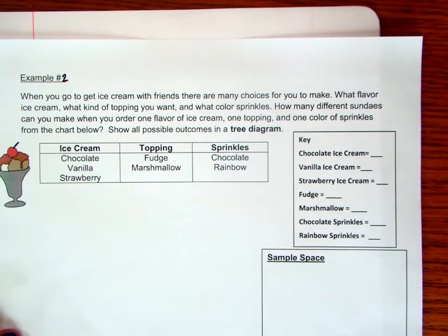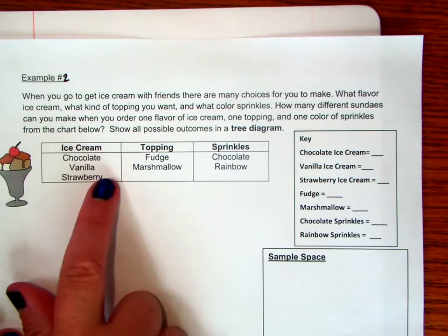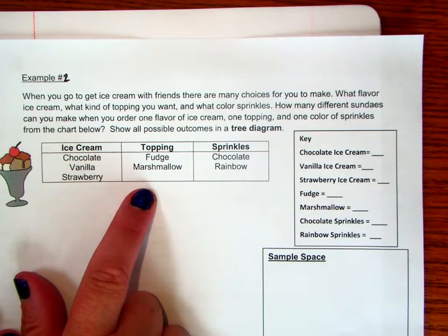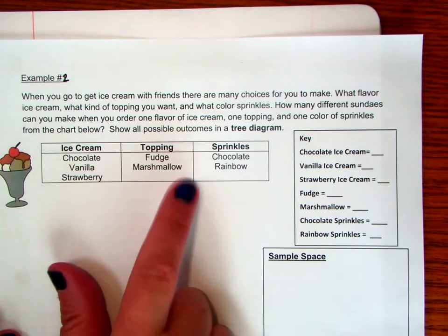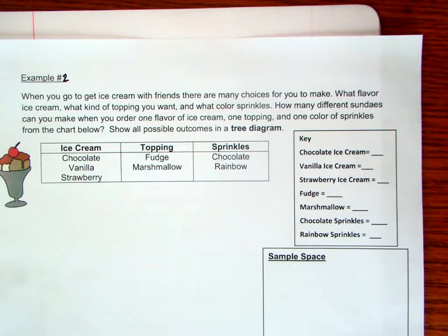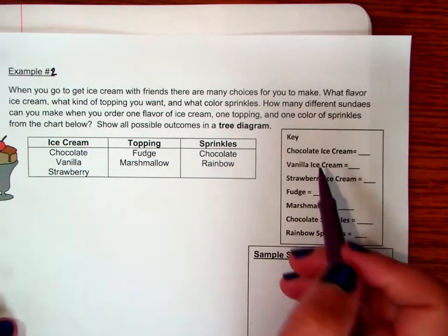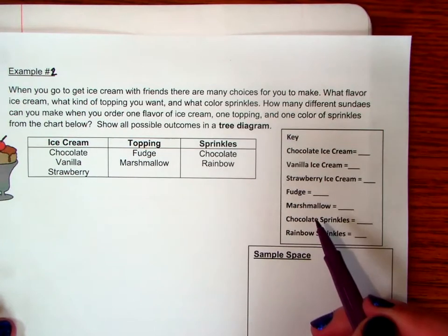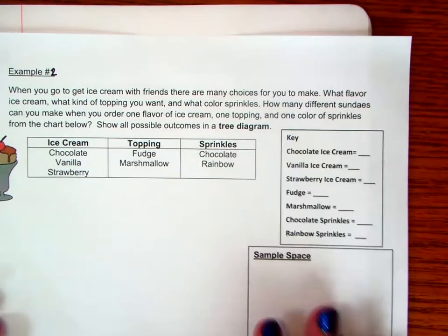Obviously it's a little bit easier to figure out a total if you just multiply all of the numbers in each option that you have. But what you'll see is that a tree diagram can be super useful when you actually need to figure out individual probabilities for different choices.